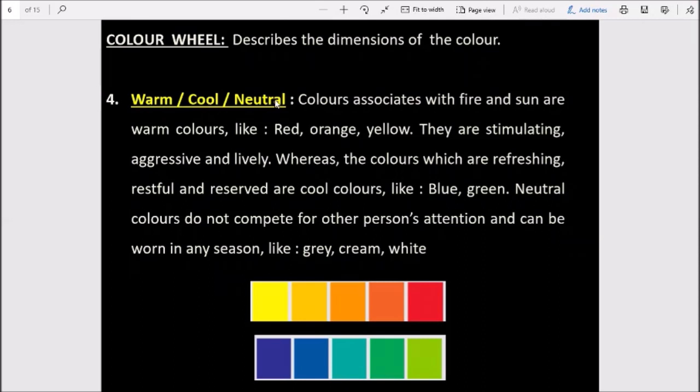Next we have warm, cool, or neutral colors. This is very important. Colors associated with fire and sun are warm colors, like red, orange, or yellow. These are called warm colors, and we mostly wear them in winters because at that time we need a warmth feeling from our clothes. They are stimulating, aggressive, and lively. These are the characteristics of these colors. These are also called advancing colors usually.